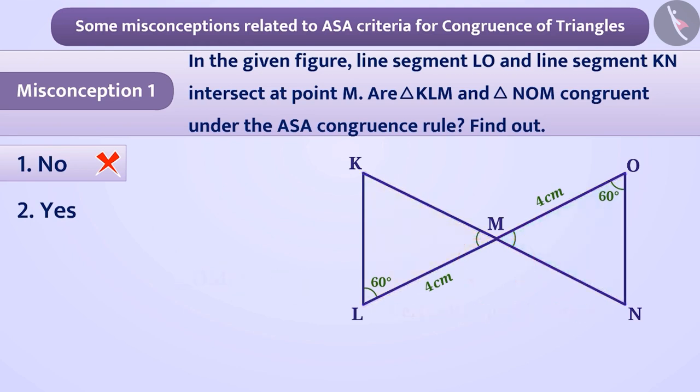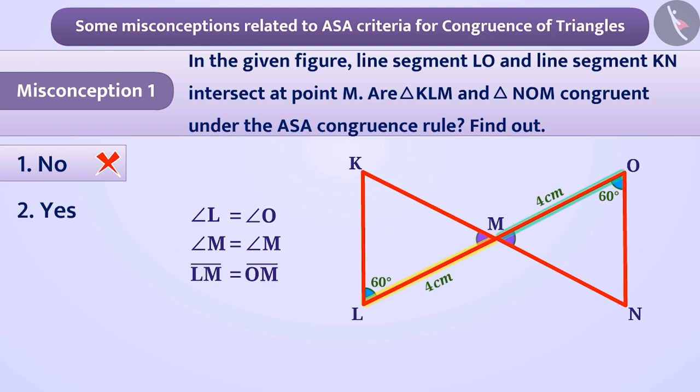Here, we observe that angle L and angle M and the included side LM of triangle KLM are equal to the two corresponding angles, angle O and angle M, and the included side OM of triangle NOM. So, under the ASA congruence rule, we can say that triangle KLM and triangle NOM are congruent.